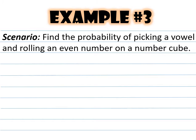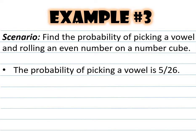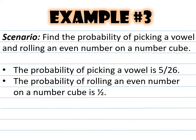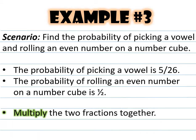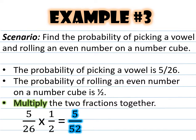Example number three: find the probability of picking a vowel and also rolling an even number on a number cube. Picking a vowel from the alphabet is 5 out of 26 — there are five vowels (A, E, I, O, U) out of 26 letters. The probability of rolling an even number is 1 out of 2, since three out of six outcomes (2, 4, 6) reduces to one half. Multiplying 5/26 times 1/2 gives us 5/52.